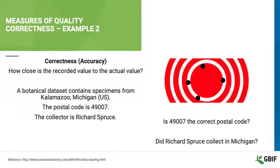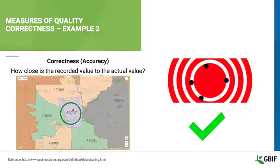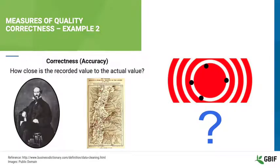Let's look at another example. Your dataset contains specimens collected in a place called Kalamazoo by a scientist named Richard Spruce. We must ask ourselves: is 49007 the right postal code for Kalamazoo? Did Richard Spruce collect in Michigan? The answer is yes to our first question — 49007 is a postal code for Kalamazoo, so the accuracy of the locality is good. But there is, in fact, a famous botanist named Richard Spruce who was born in 1817 and died in 1893, and he conducted his collecting in the Amazon basin and Andes Mountains in South America. Something is not quite right, so we need to find out more about the collector before we can be confident in the correctness of these data.